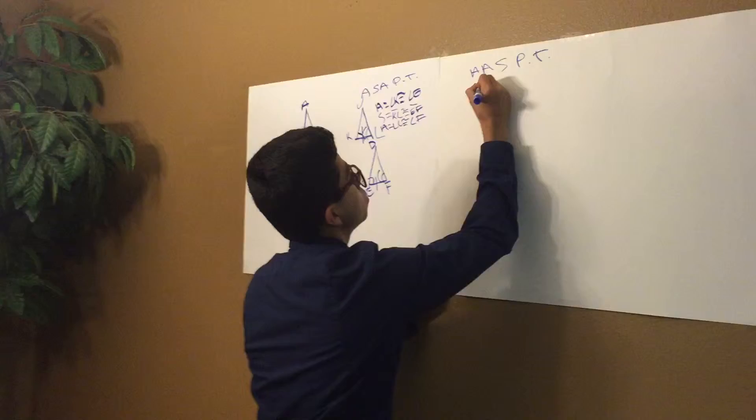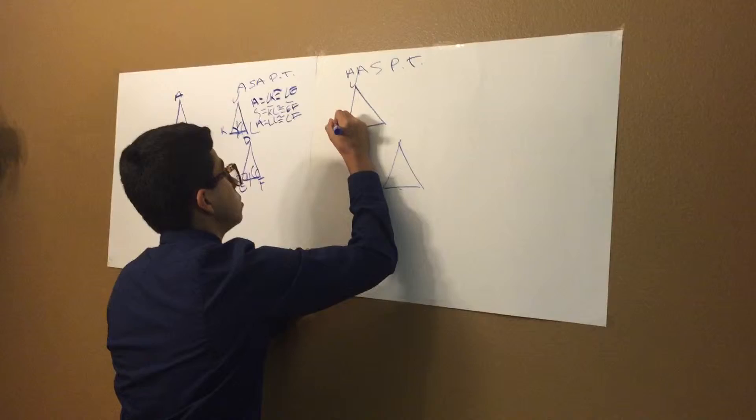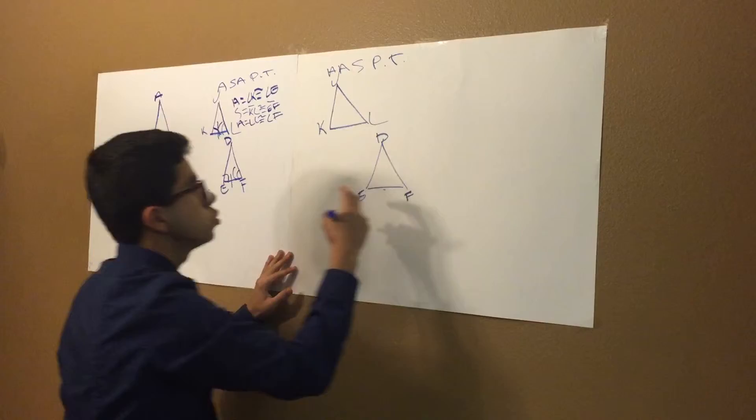For theorem, one triangle and the other triangle: J, K, L, D, E, F.